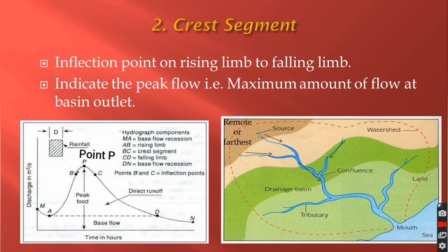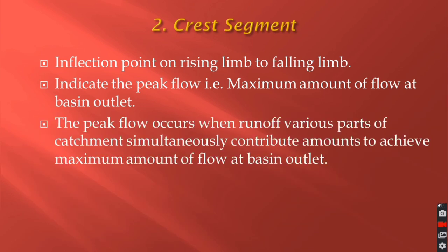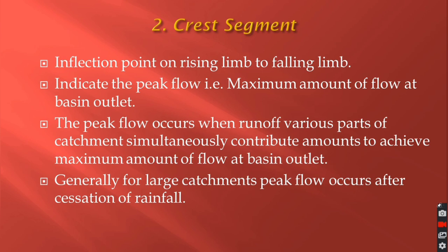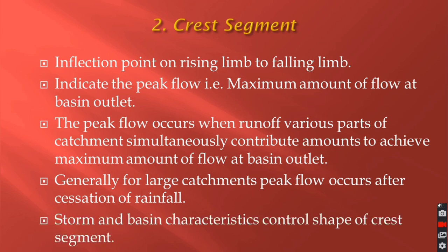The peak flow occurs when runoff from various parts of the catchment simultaneously contributes to achieve the maximum amount of flow at the basin outlet. Generally for large catchments, peak flow occurs after the cessation of rainfall, as it will take time for the runoff to move from different parts of the catchment. Storm and basin characteristics control the shape of the crest segment, similar to the rising limb.